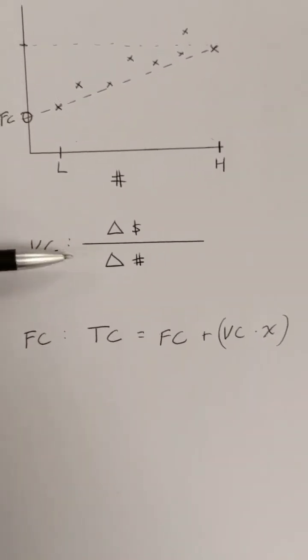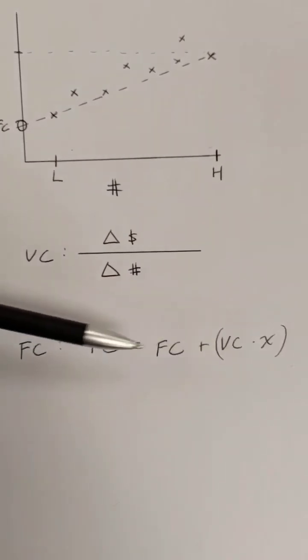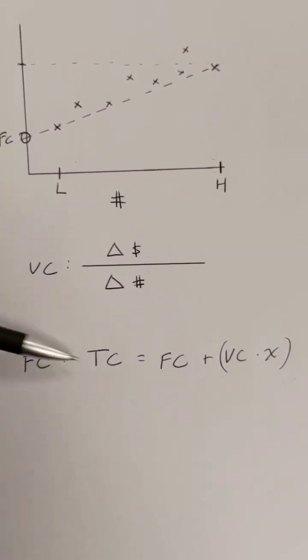Once we have the variable cost, we plug that into the total cost equation, and we can solve for the fixed cost.